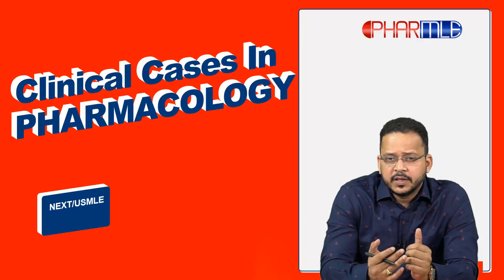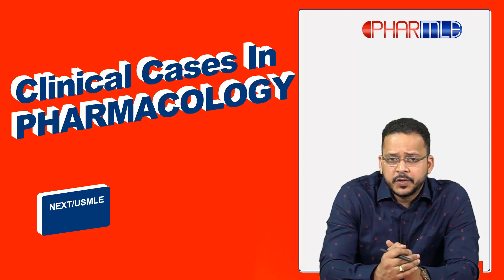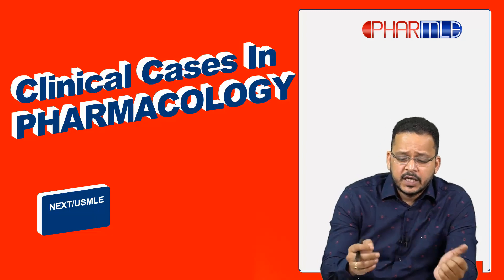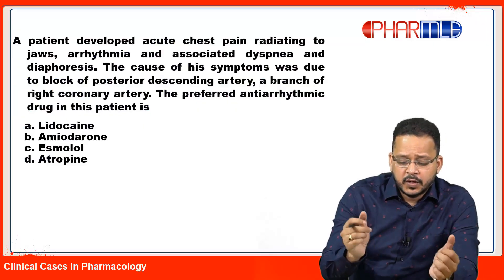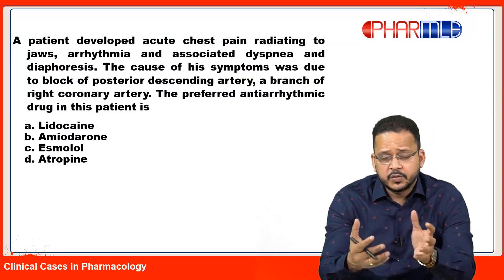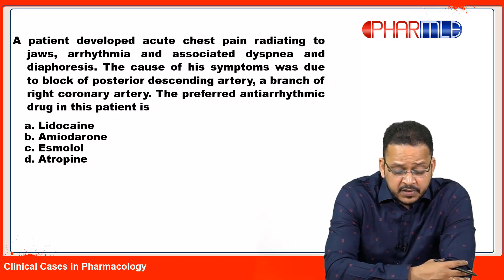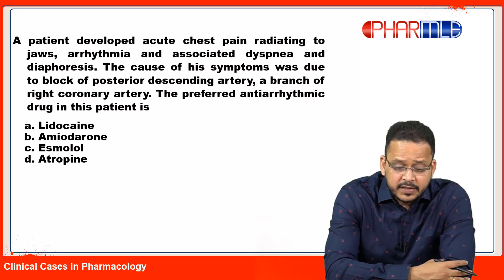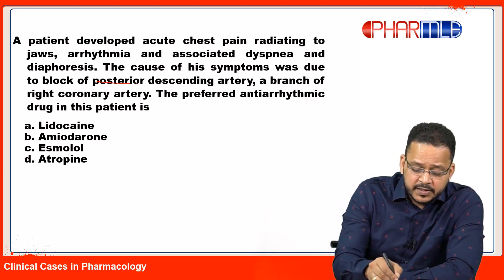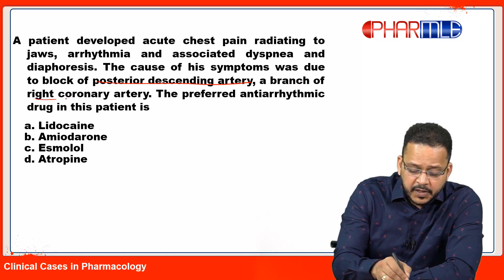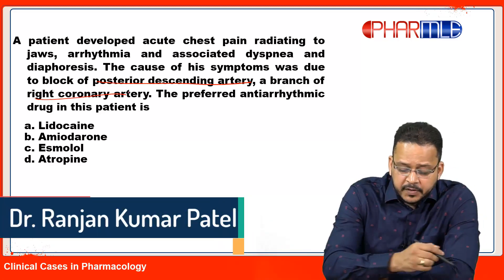Hello guys, welcome to Clinical Cases in Pharmacology. For today, the case I have chosen is related to a disorder described in the question here. A patient developed acute chest pain radiating to the jaws, arrhythmia, associated dyspnea, and diaphoresis. The cause of these symptoms was due to blockade of the posterior descending artery, a branch of the right coronary artery.